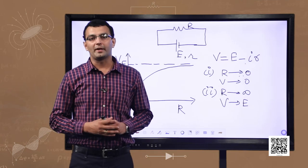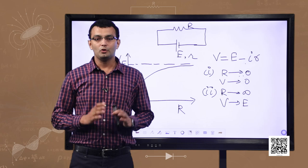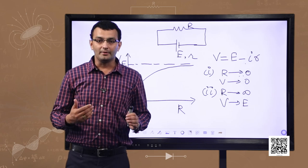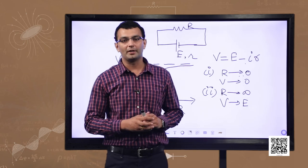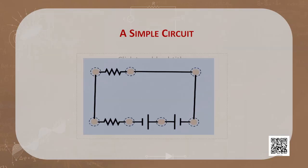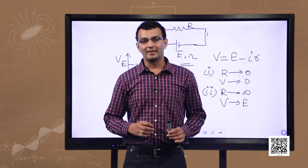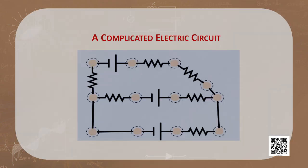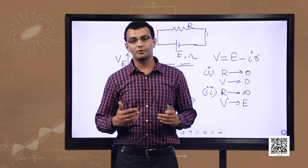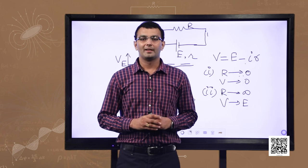We will also solve many more textbook and exemplar problems based on combinations of cells. You may also try to find out the combinations of cells in an inverter battery and a laptop battery, and check the EMF of every cell and battery you see. When circuits become complicated it becomes extremely difficult to find the value of current using Ohm's law alone, as in the next picture where finding the resultant resistance and EMF is very hard. To solve such complicated circuits, two rules called Kirchhoff's rules are very useful. Let us study about Kirchhoff's rules.